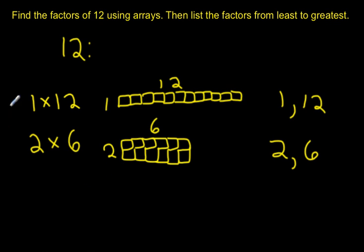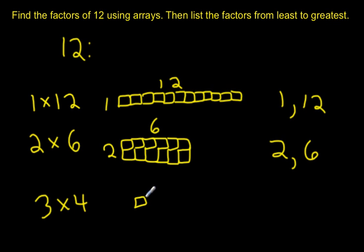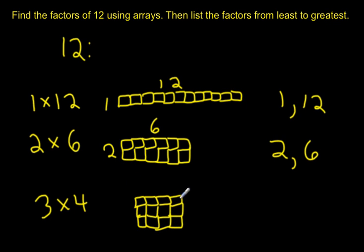Now I want to ask: what about 3 times any number? Is 3 a factor of 12? From my times tables, I know 3 times 4 is another way to make 12. So I can make 3 rows of 4 — 1, 2, 3, 4 in each row, and 3 rows total, or 4 columns. So 3 and 4 are also factors of 12.